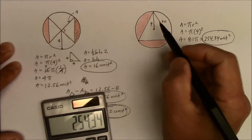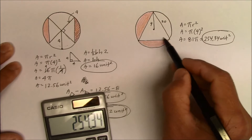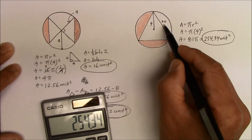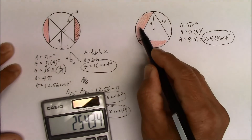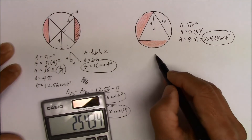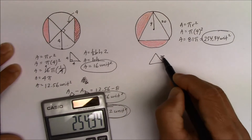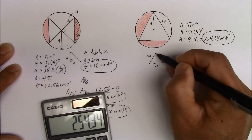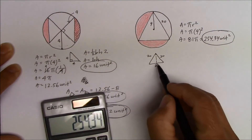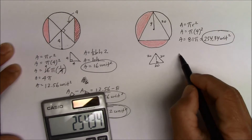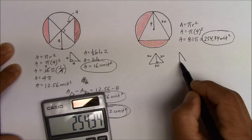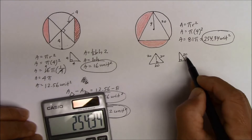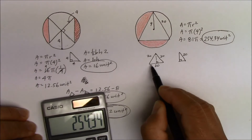Now we have to find the area of what appears to be an equilateral triangle, because this side is 20, that means this is 20, and this is 20. So since all sides are 20, we can find the area by splitting it in half. If I take half of that equilateral triangle, it becomes a right triangle with a hypotenuse of 20 and a base of 10.